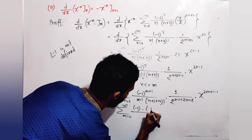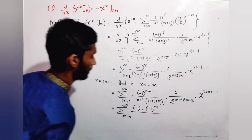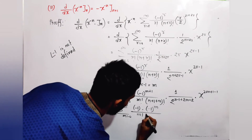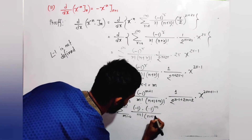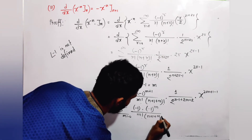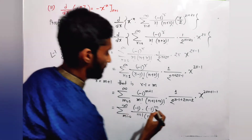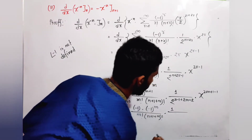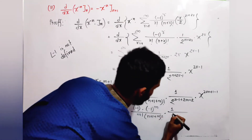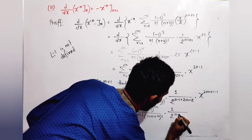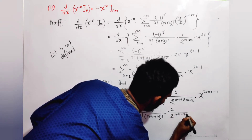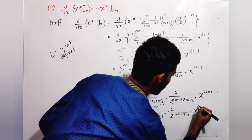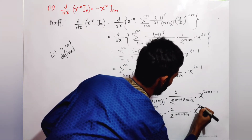The resulting series is: sum from m=0 of [(-1)^m / (m! · (n+1+m)!)] · (1/2)^(n+1+2m) · x^(2m). This can be compared directly to the series definition of J_{n+1}.